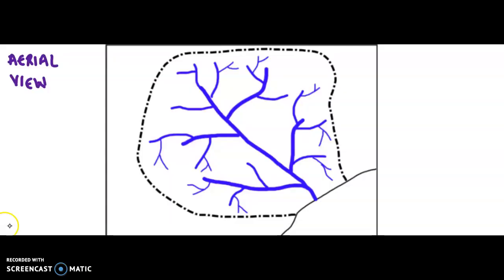This is in fact what you call an aerial view — a bird's eye view, a view from above. Basically, you are seeing a specific region here, a specific area. These purple lines simply highlight or represent streams and tributaries and such.